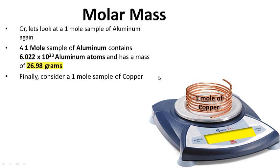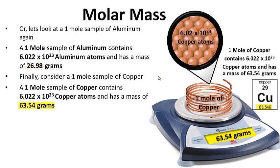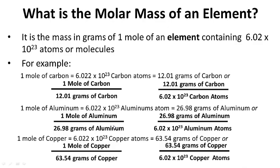Finally, let's consider our one-mole sample of copper. A one-mole sample of copper contains 6.02 times 10 to the 23rd copper atoms, and if we put a mole of copper on a scale, it will have a mass of 63.54 grams — equal to the atomic mass of copper. For your notes: what is the molar mass of an element? Question on the left-hand side, answer on the right-hand side. Please write the examples down. Go ahead and pause this while you write.